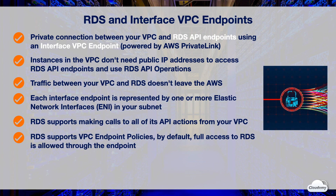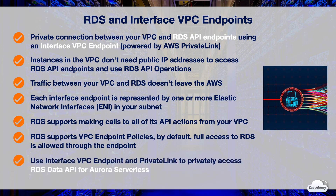RDS supports VPC endpoint policies. By default, full access to Amazon RDS is allowed through the endpoint. You can also use interface endpoints and AWS PrivateLink to privately access RDS Data API for Aurora Serverless from your VPC. RDS Data API allows you to issue SQL commands against an Aurora Serverless cluster by simply invoking an HTTPS API endpoint.